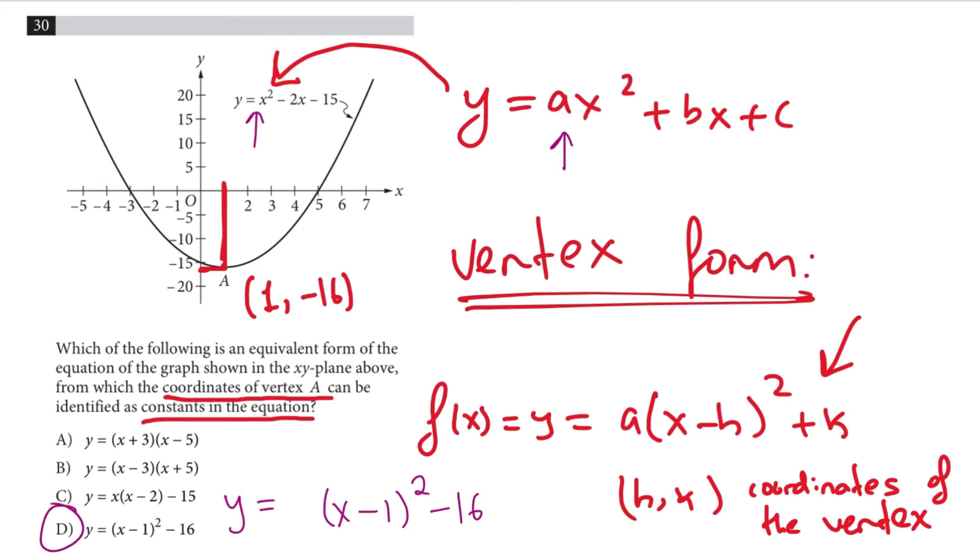Therefore choice D is the correct one. Now you have to remember for such types of questions, vertex form of a parabola is the form of the equation where the vertices or the coordinates of the vertex can be identified as constant numbers just like here, 1 and negative 16.